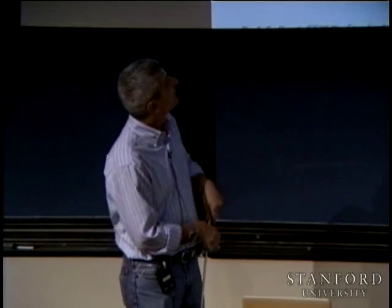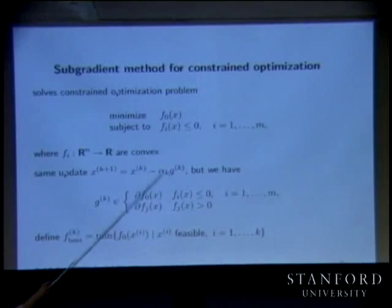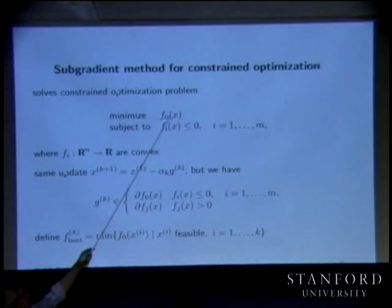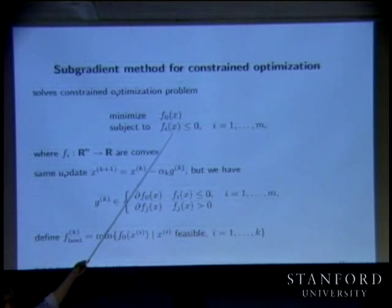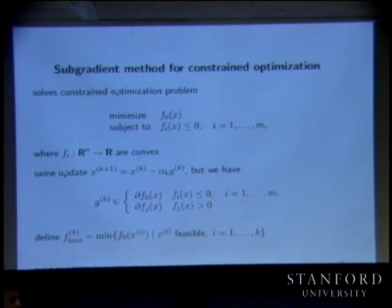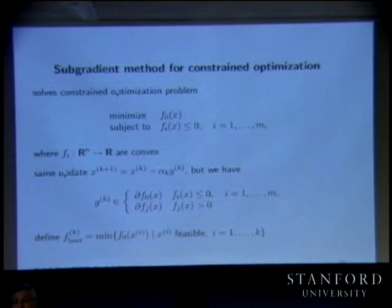The algorithm goes like this: you're given x and start walking through the list of constraints. You evaluate f1, f2, f3; if those are less than or equal to zero, you go to the next one.